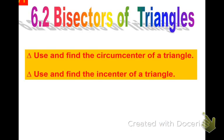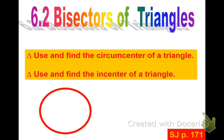We're going to start section 6.2, bisectors of triangles. The gist of this entire lesson: you're going to learn a couple of words, and then we're finding the center of a triangle. That's literally what we're doing. There are two types of centers of a triangle. A lot of times we think of the center as the middle, but there's a scientific definition of a center.